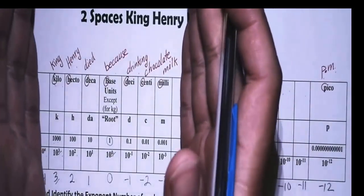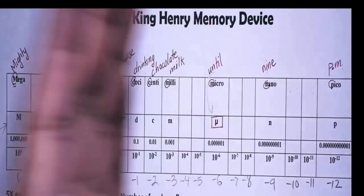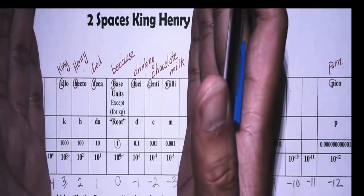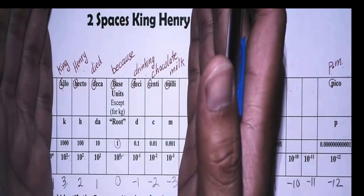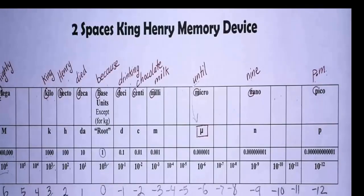But if you are having a hard time memorizing the two spaces, focus on this: the majority of your science class will focus on King Henry died because of drinking chocolate milk. So thank you to King Henry, we now know all the values of the most common prefixes used in any science classes.